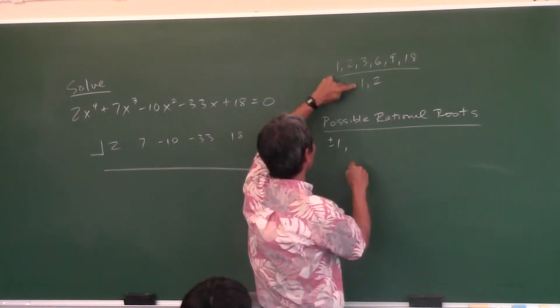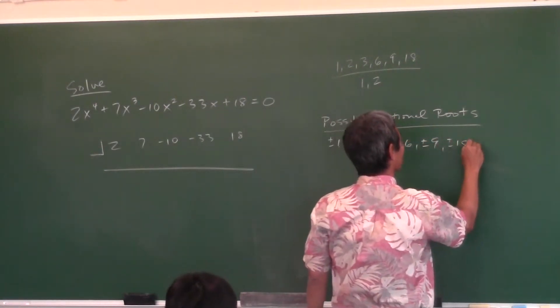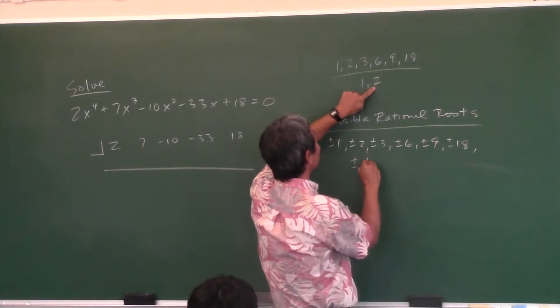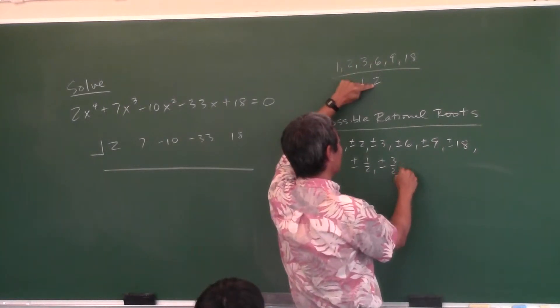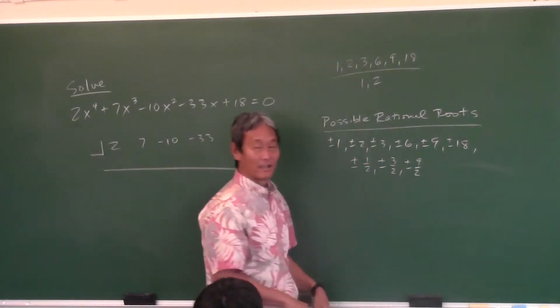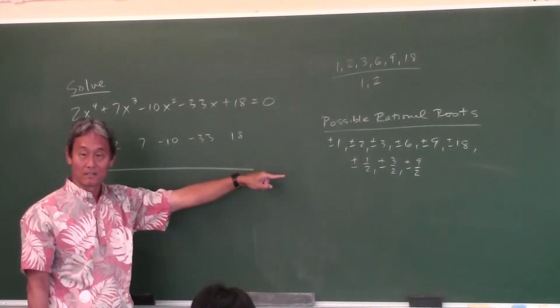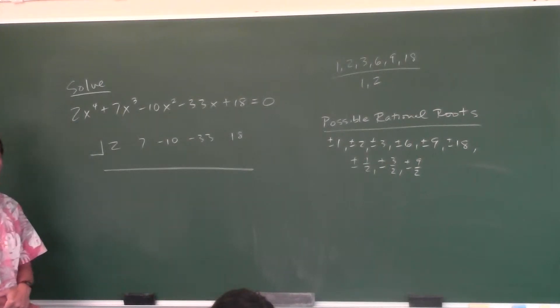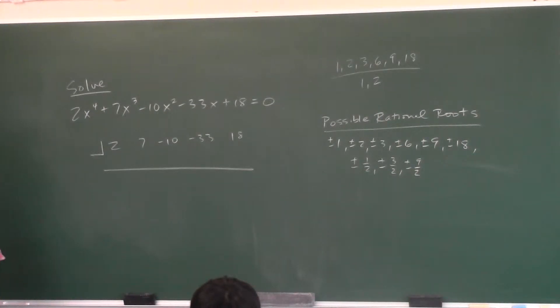If you take all the combinations of these numbers over these numbers, those are the possible rational roots. So 1 over 1, 2 over 1, 3 over 1, 6 over 1, 9 over 1, 18 over 1. And then now we go over 2: 1 over 2 would be plus or minus half. 2 over 2 is 1, we already got that. 3 over 2, plus or minus 3 halves. 6 over 2 is 3, we already got that. 9 over 2, and 18 over 2 is 9. These are the possible rational roots. If this equation has any rational root, it has to come from that list. So if you do synthetic division, no sense trying 4 or 5 because it's not on that list. You want to use these theorems to reduce the amount of time you're going to spend on it. So what number should I try first? You should always try 1 first and then work your way up until you get to the upper bound.